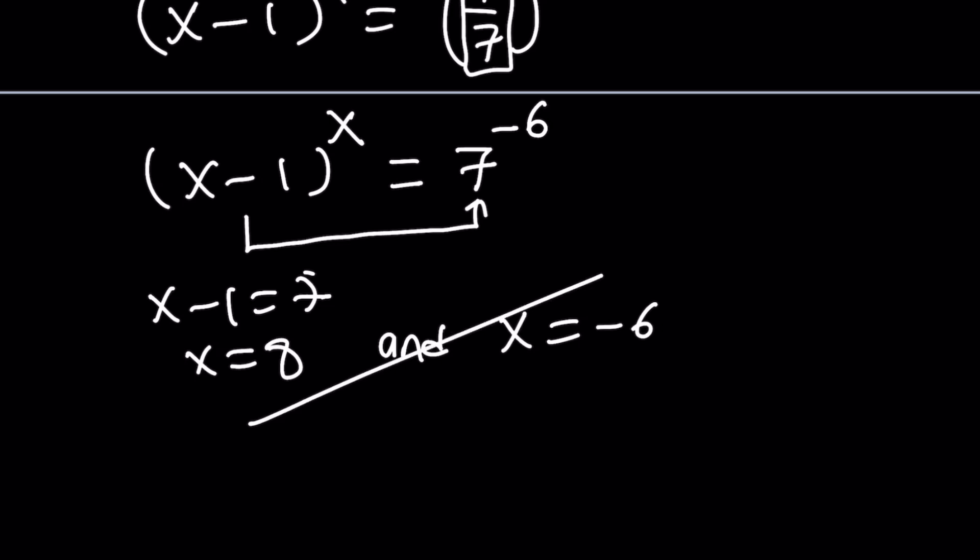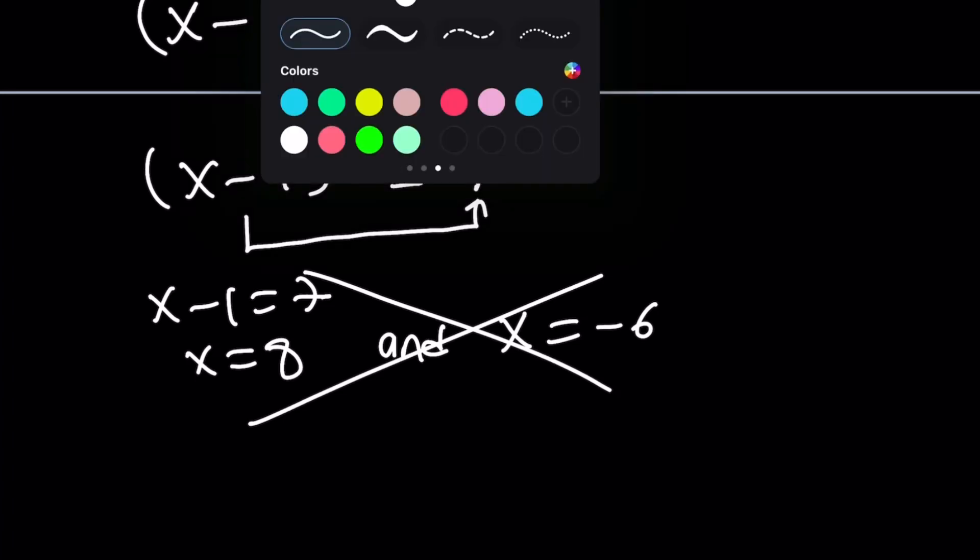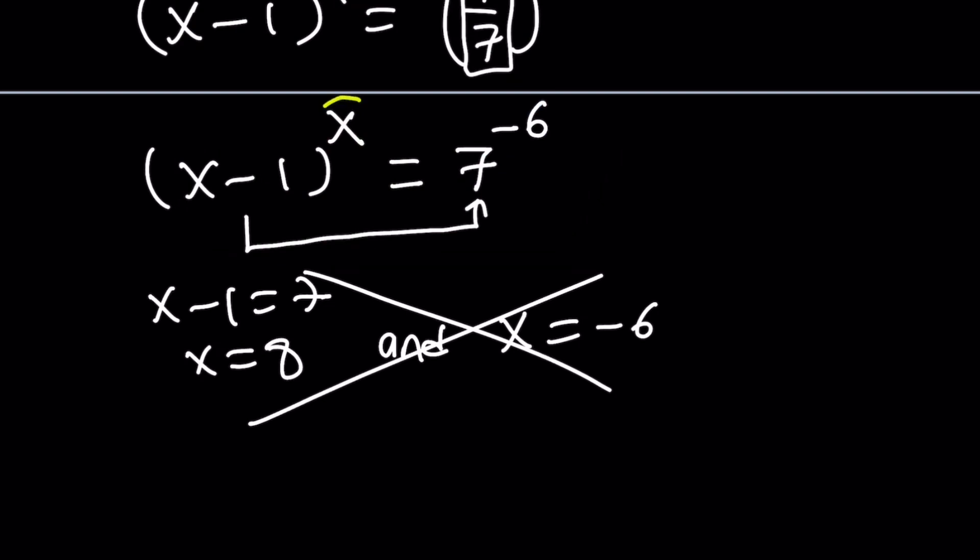But guess what? We can manipulate this a little bit more to get what we want. Notice that by changing it, by using a negative exponent, I was able to get this equal to negative 6. So what if x is equal to negative 6?